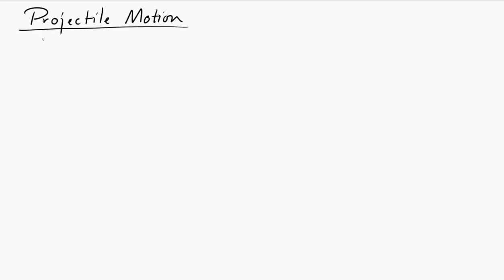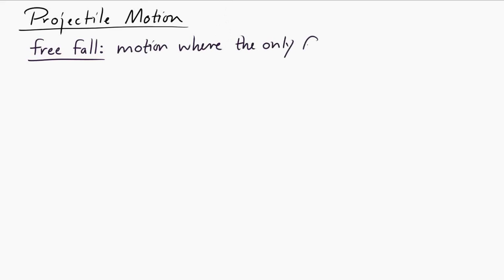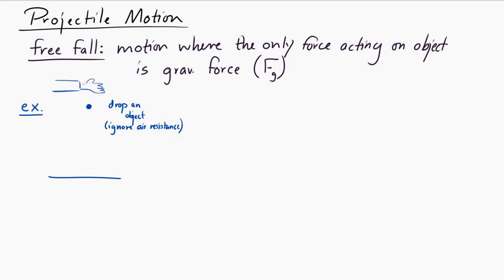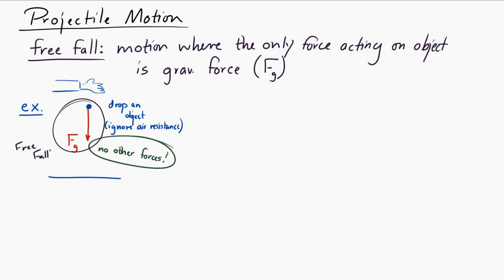Let's take a look at projectile motion, but before we get there, let's talk about freefall. Freefall is defined as motion where the only force acting on the object is the gravitational force. For example, if you were to drop an object — ignoring air resistance — after it leaves your hand and before it hits the ground, the only force acting on it is gravity. There's no normal force, no friction, no tension — only gravitational force.